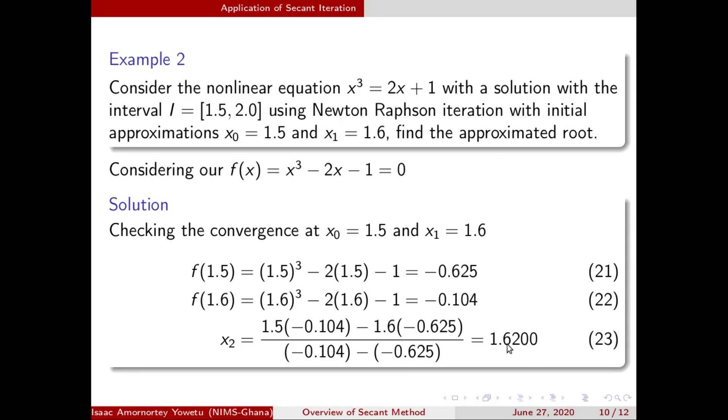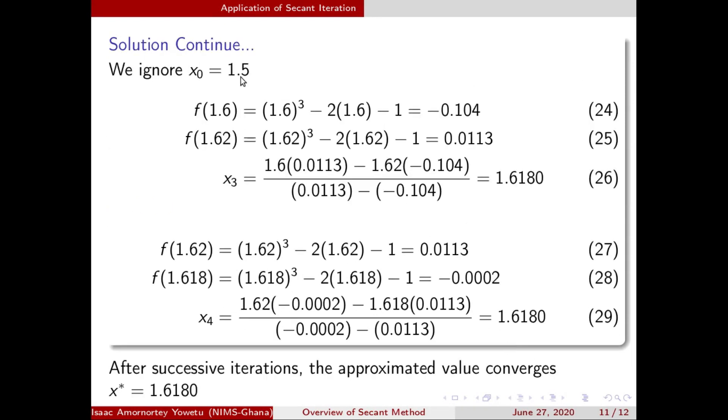We tend to ignore x0 again. We use x1 and x2 to give us x3. These are the respective functional values of x1 and x2. We plug it here, it gives us x3. We now ignore x1 and use x2 and x3 to give us x4. Within just a few steps, we arrive at our convergence value, which is 1.6180.